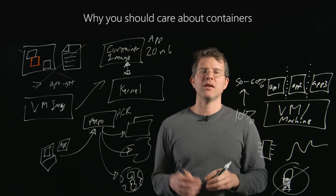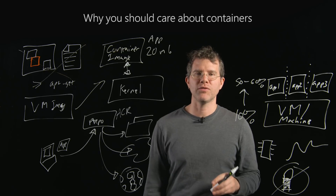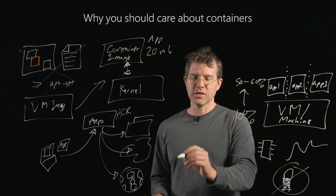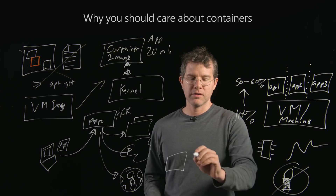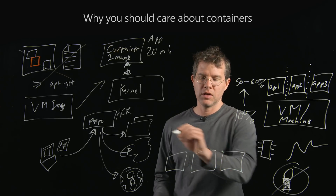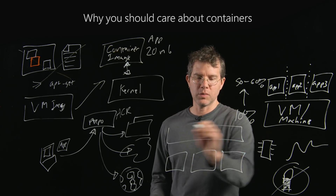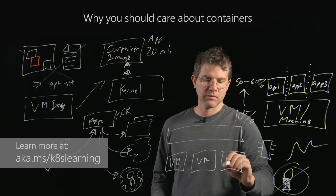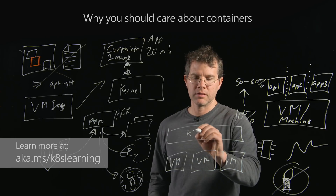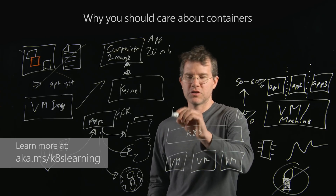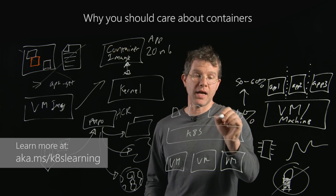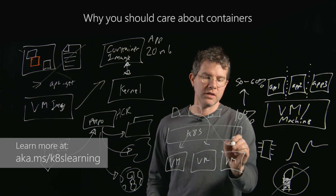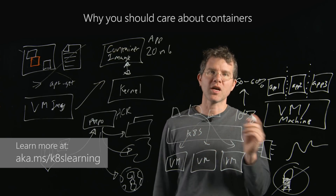To really make containers useful, you need a container orchestrator — that's where something like Kubernetes comes in. If you have a whole bunch of machines, you can use the Kubernetes API to distribute container images — or really many container images — onto all of the various machines. But we'll talk about that later.